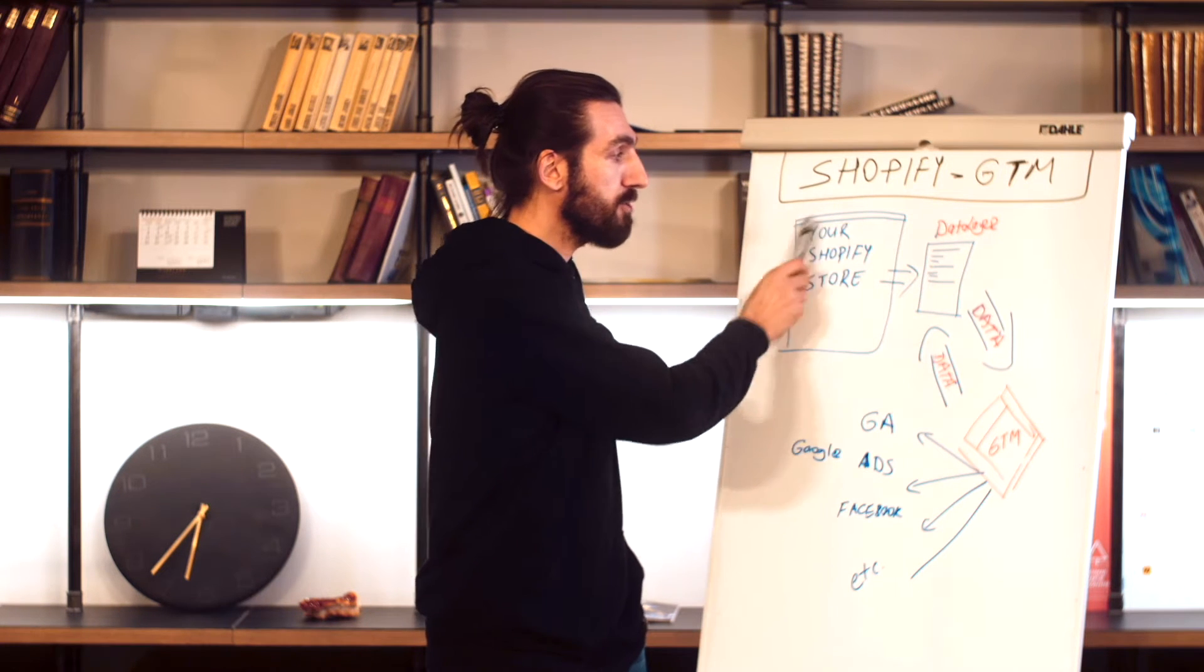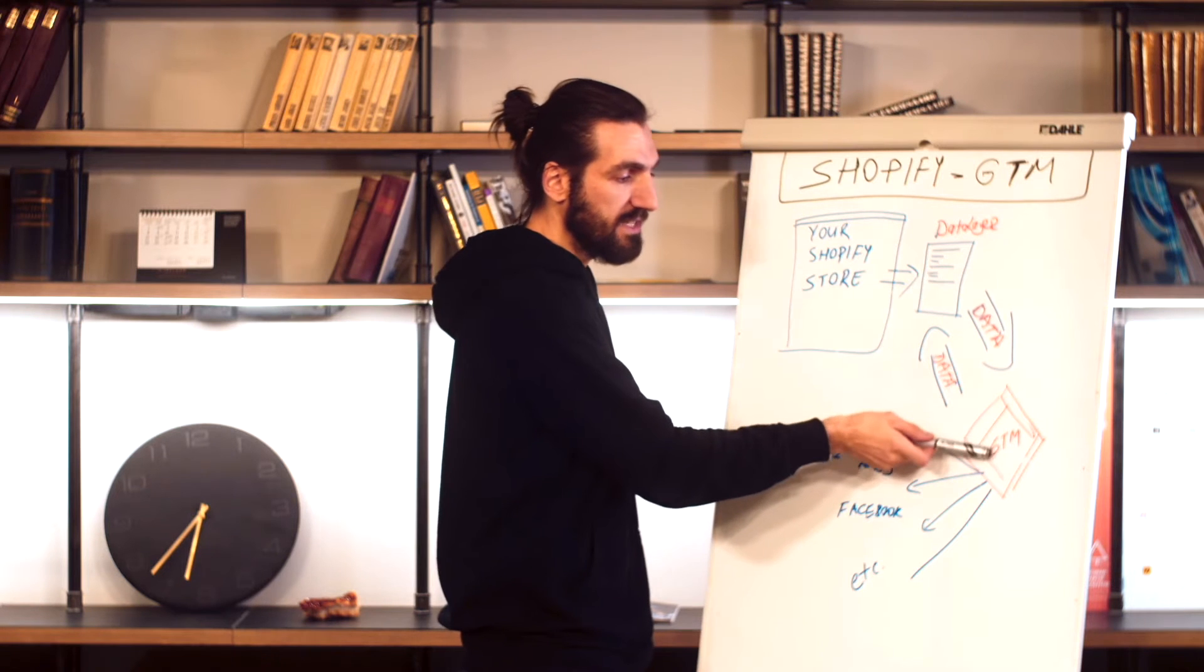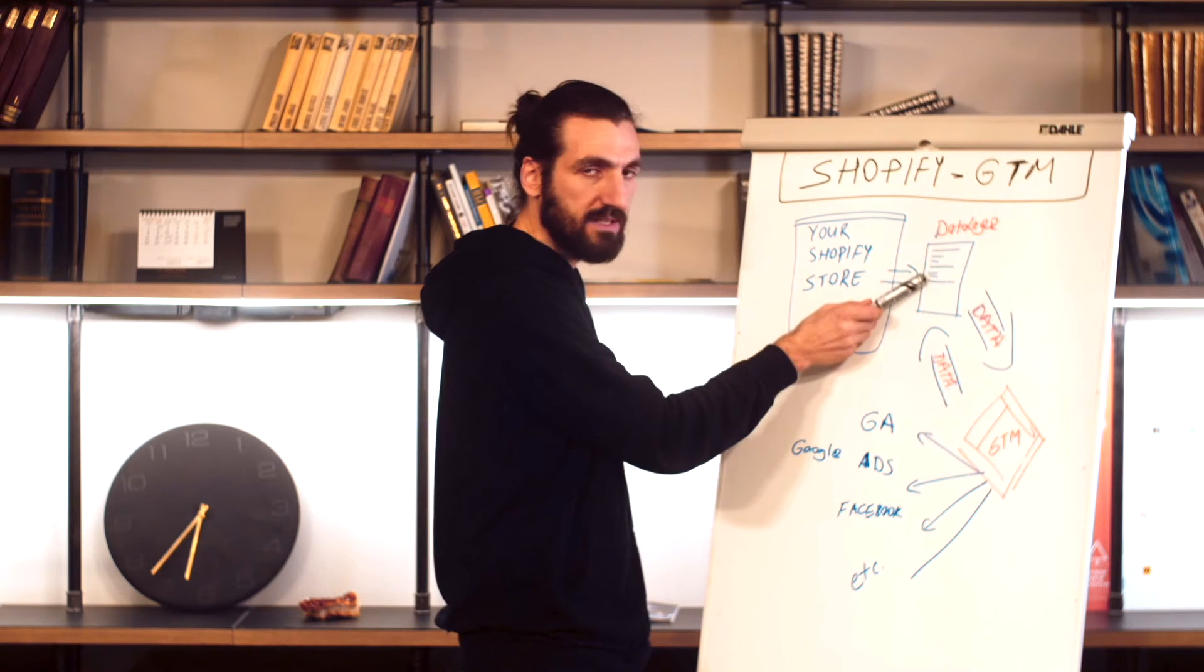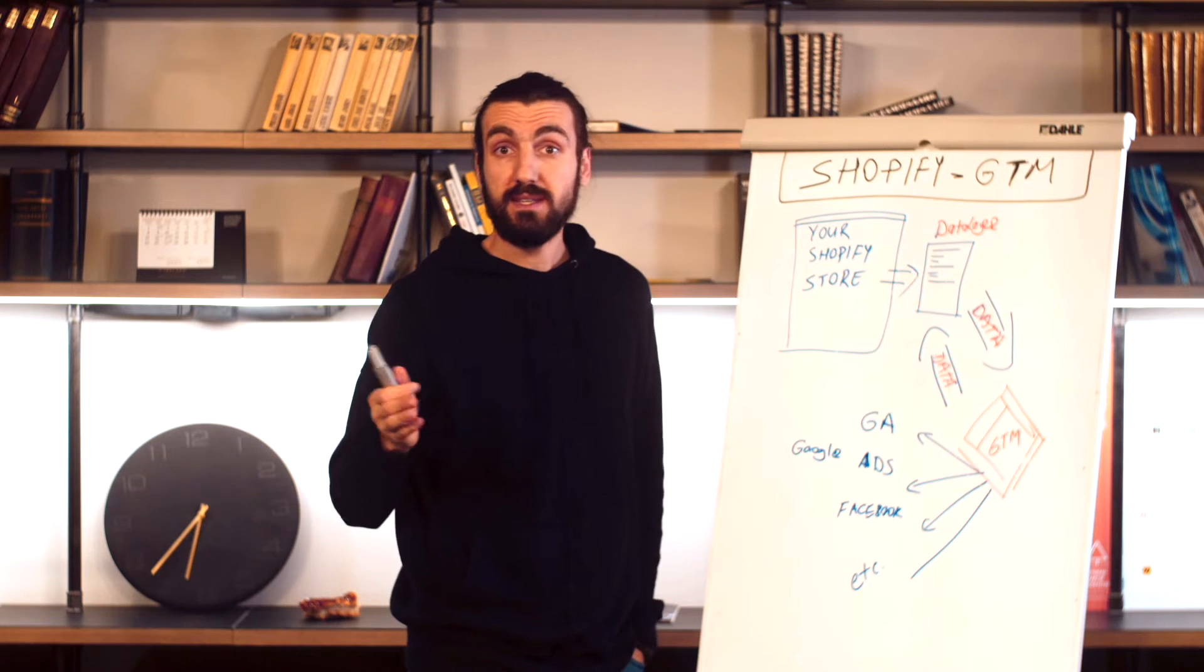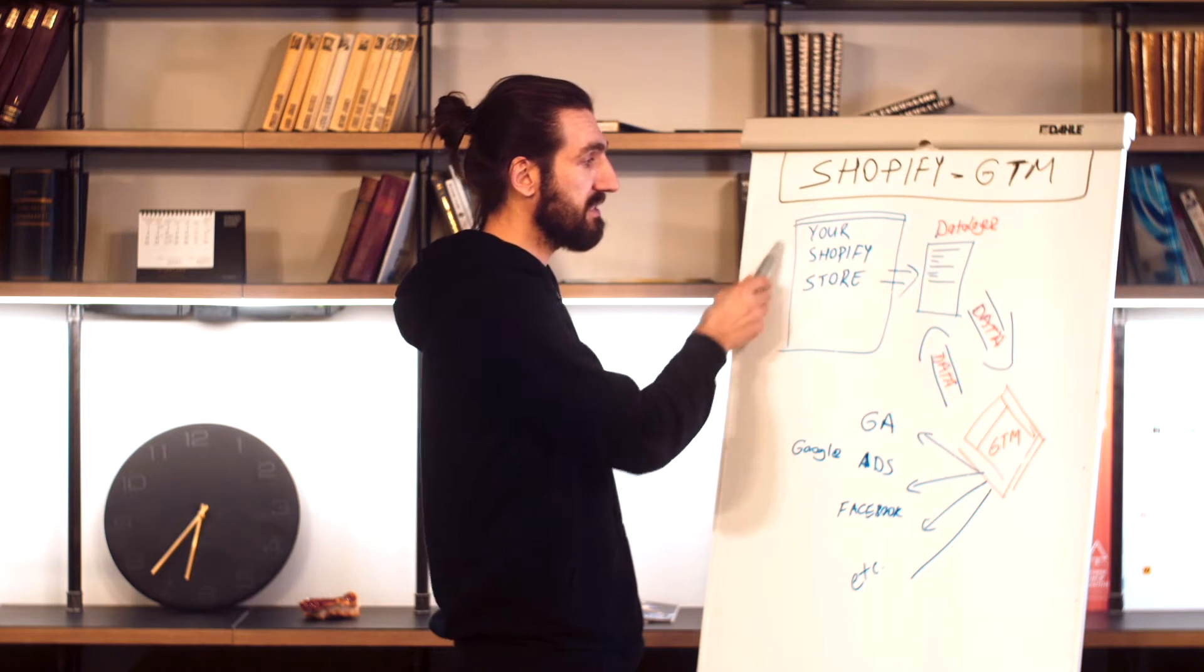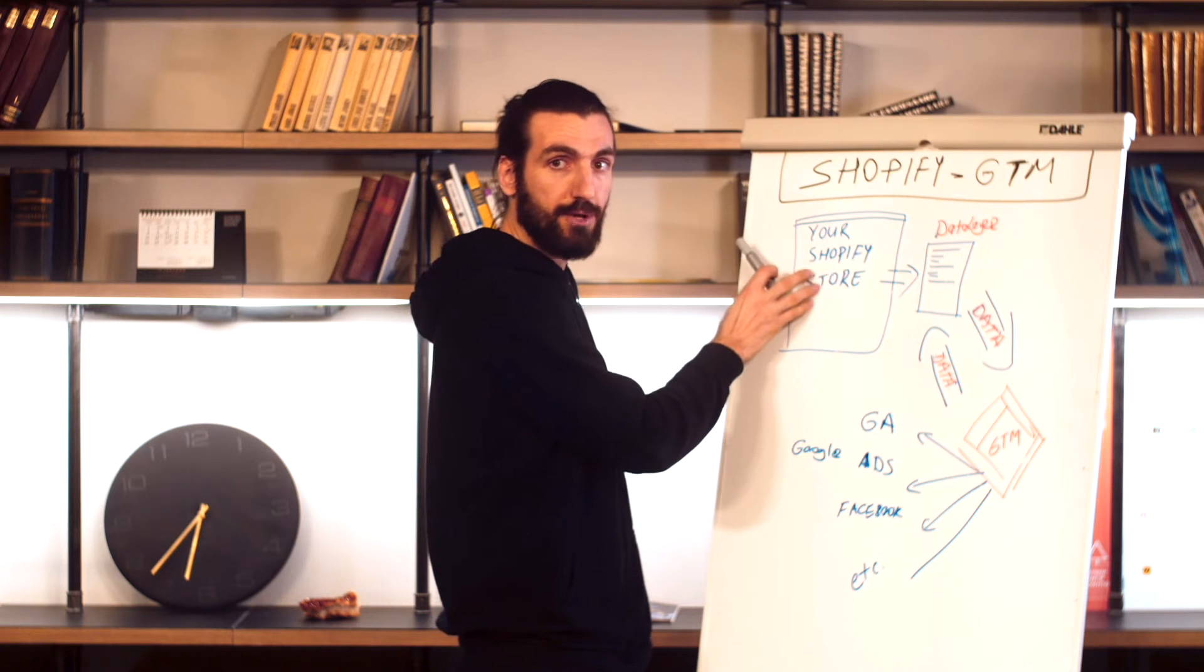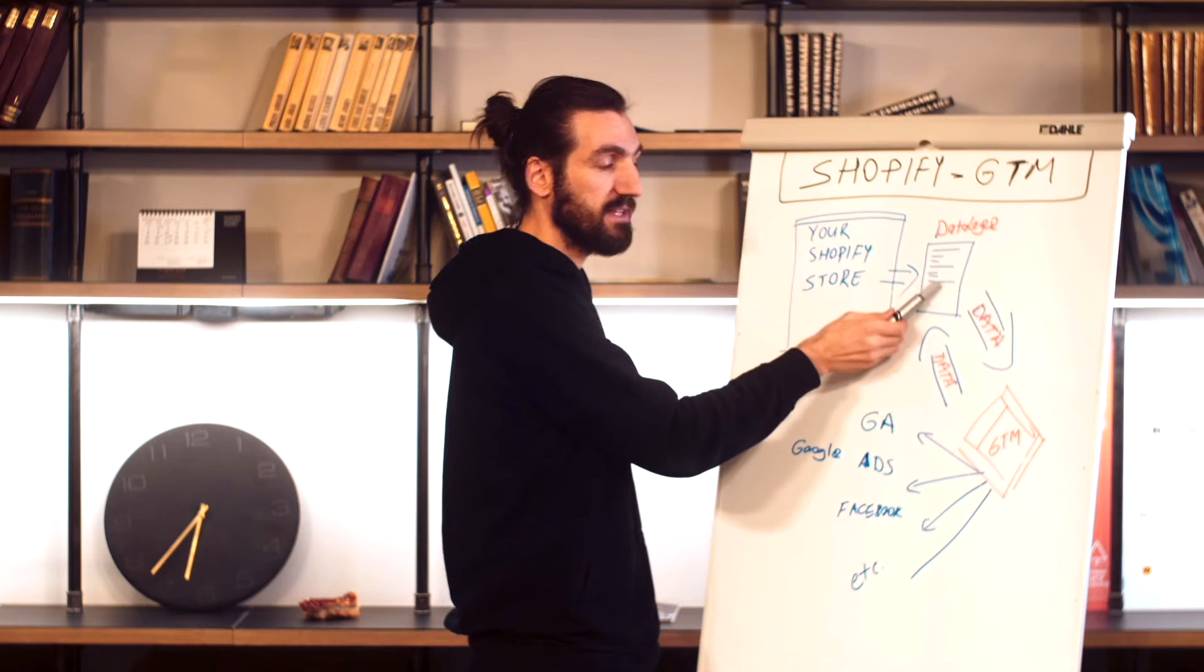The store pushes the relevant data into the data layer. So the GTM here is able to read the data layer and process the data within. A quick example of how it will work: the user visits the product page, the product's relevant data is pushed into the data layer.